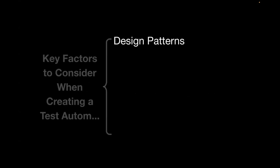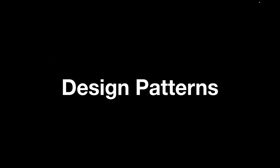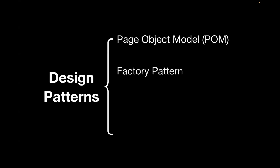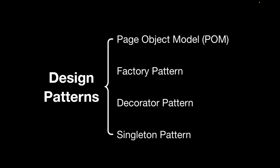The first component is design patterns. Design patterns are used to create reusable solutions to common problems. Using a correct design pattern, you can maintain cleaner, scalable, and more efficient code. Examples include the Page Object Model, factory pattern, decorator pattern, or singleton pattern. Based on your requirement, you can choose the right design pattern. One of the most widely used in test automation is the Page Object Model, which lets you separate your test data file from your page file, making the code much easier to maintain.